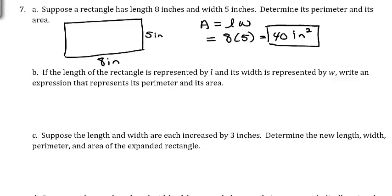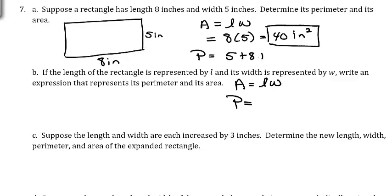If the length of the rectangle is represented by L and its width by W, we write an expression for its perimeter and area. The perimeter is the total distance around: 5 + 8 + 5 + 8 = 26 inches. The area is L times W, and the perimeter is 2L plus 2W.